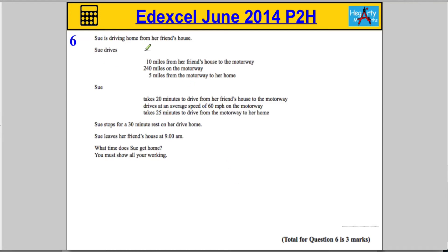We're told that Sue is driving home from her friend's house. She drives 10 miles from her friend's house to the motorway, then 240 miles on the motorway, and then 5 miles from the motorway to her home. Sue takes 20 minutes to drive from her friend's house to the motorway, drives at an average speed of 60 miles per hour on the motorway, and then takes 25 minutes to drive from the motorway to her home. Sue stops for a 30-minute rest, and she leaves the house at 9 a.m. What time is she going to get home? We've got to show all our working.